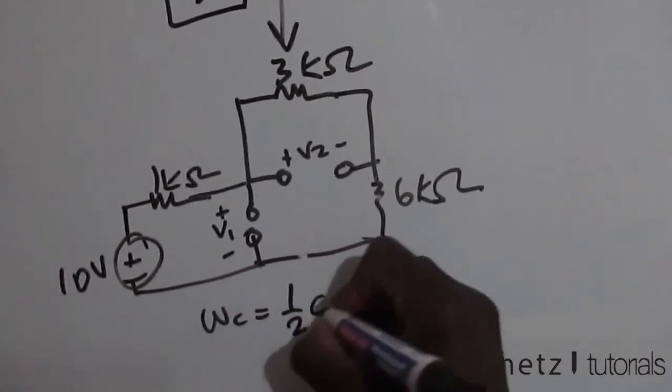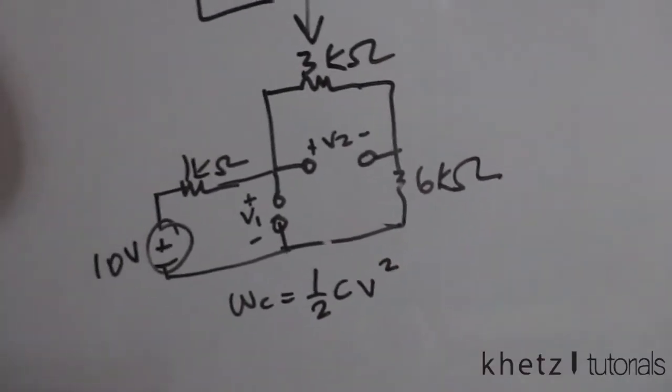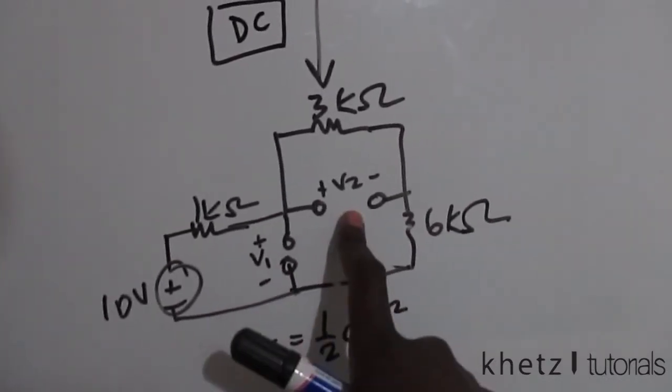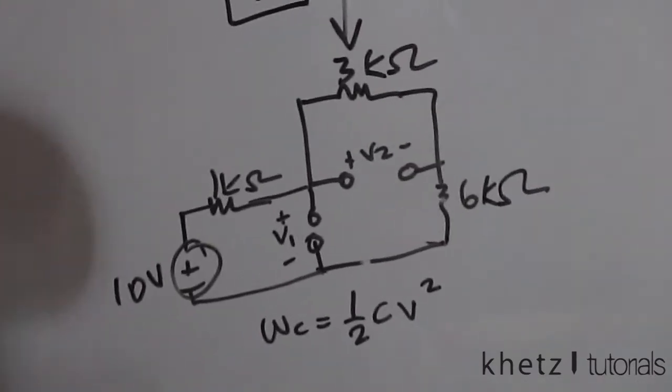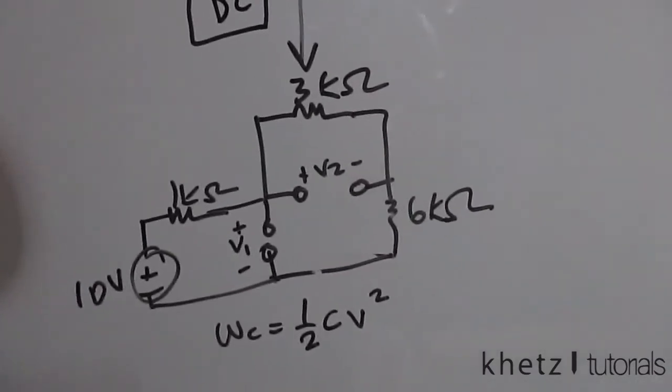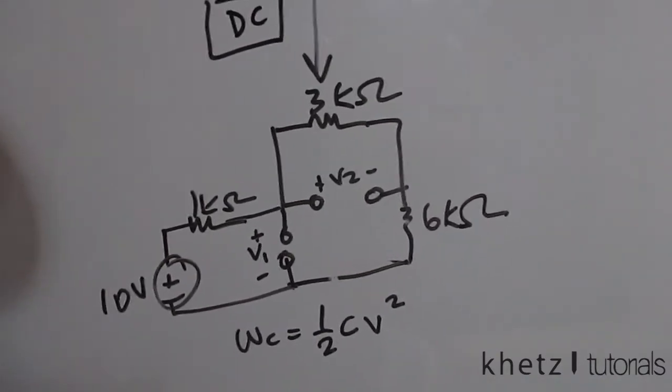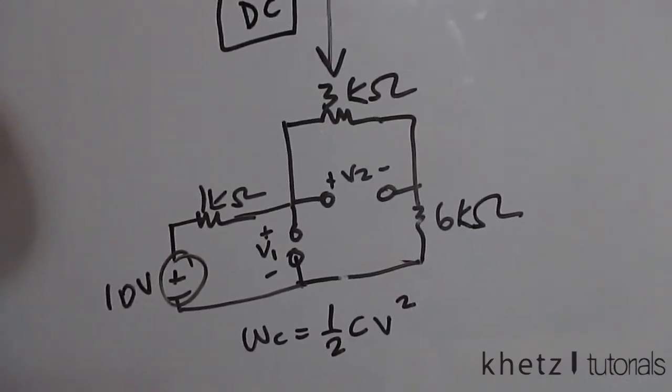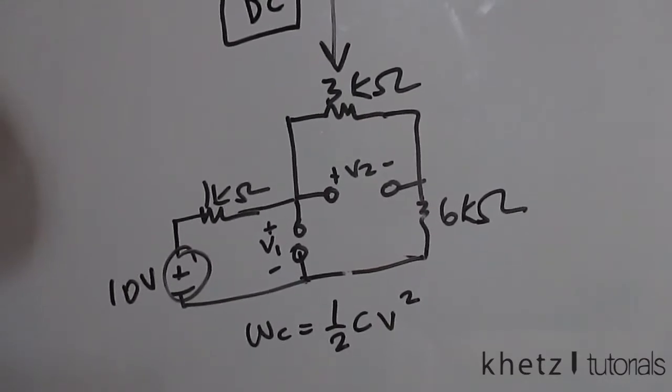Let's proceed to find these two voltages. There are quite a few ways we can use to find the voltages, one of which is to go around the loops, and another is to do basic voltage division. Let's do voltage division to find the voltages.